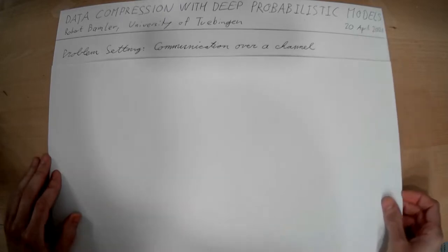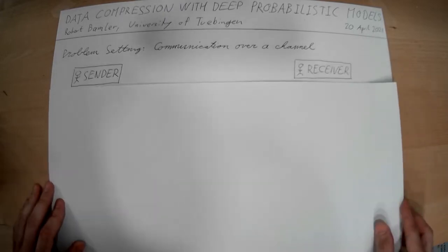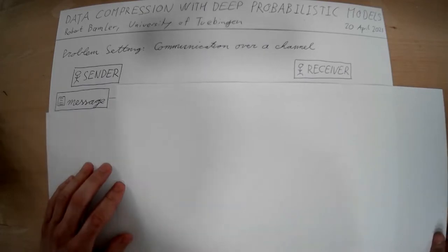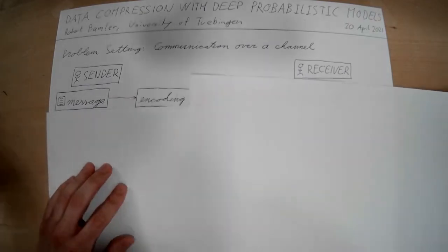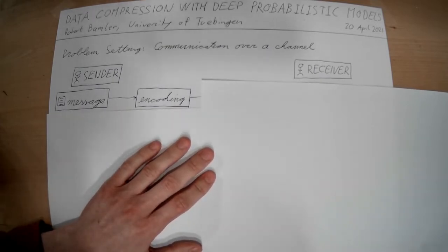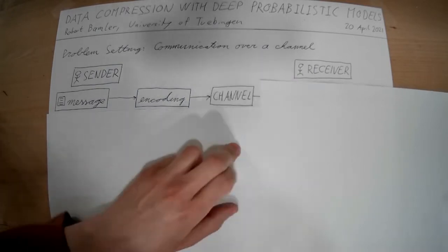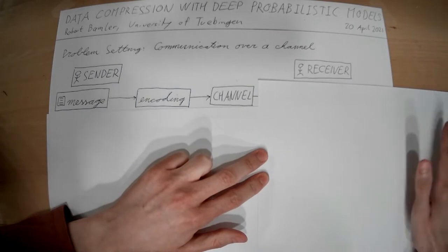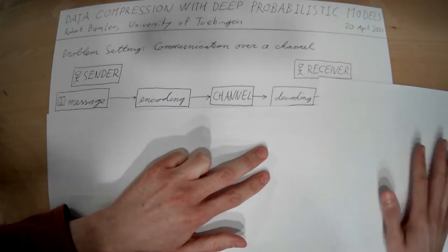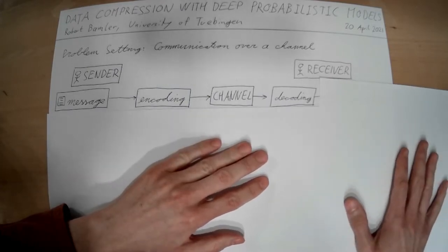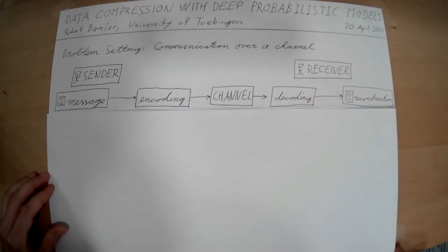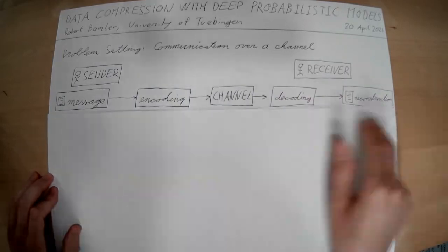We have two parties: a sender and a receiver. The sender has some message and they want to send that message to the receiver. In order to do that, they first encode the message, which is some transformation they do to this message. Then they take this encoded message and send it through what we call a channel. The receiver then takes the output of the channel and inverts the encoding step — we call this decoding — and the decoding step outputs a reconstruction of the original message.